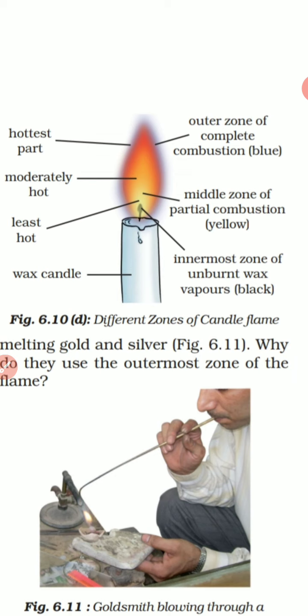Then the innermost zone: that is the unburnt part, it is black in color, and it is the least hot. These are the zones of a candle flame.